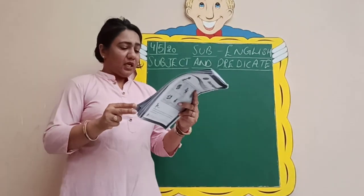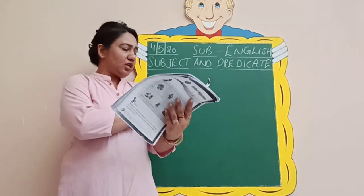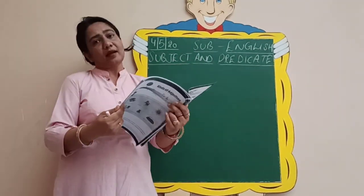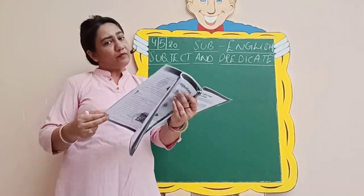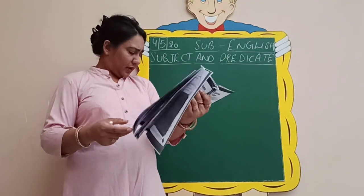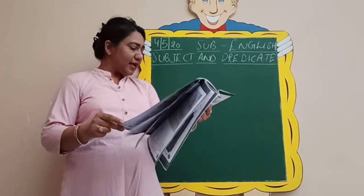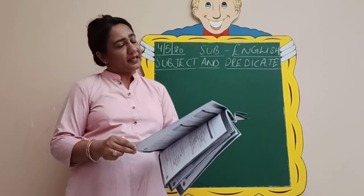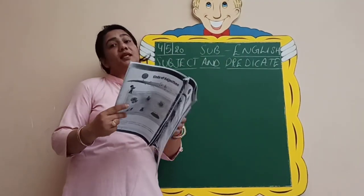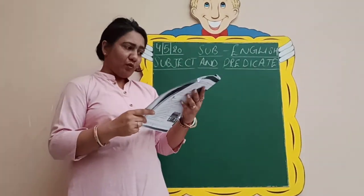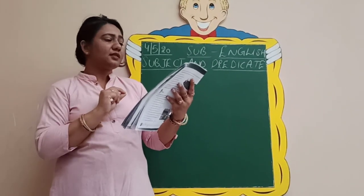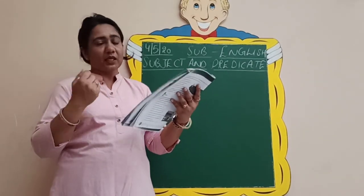Moving on to page number 22 and 23, there are some rules I asked you to go through — those I already explained, and it was for your self-revision. Coming to page number 24, there was one exercise to identify what type of sentence it is, which we have already discussed. Then we have: underline the subjects in these assertive sentences. There are 10 sentences and you need to underline the subject. Let's match our answers.